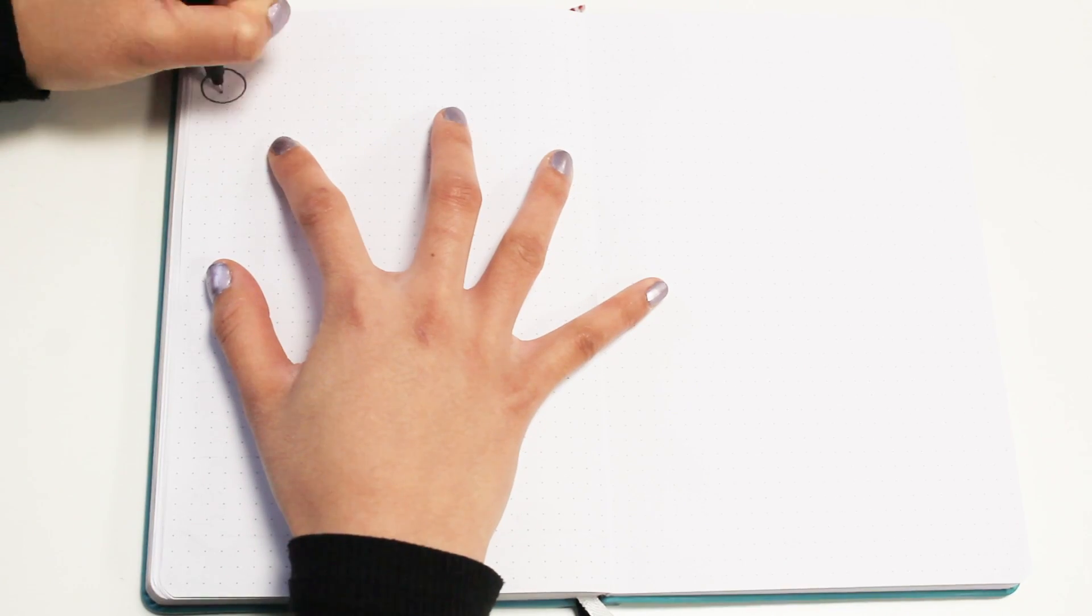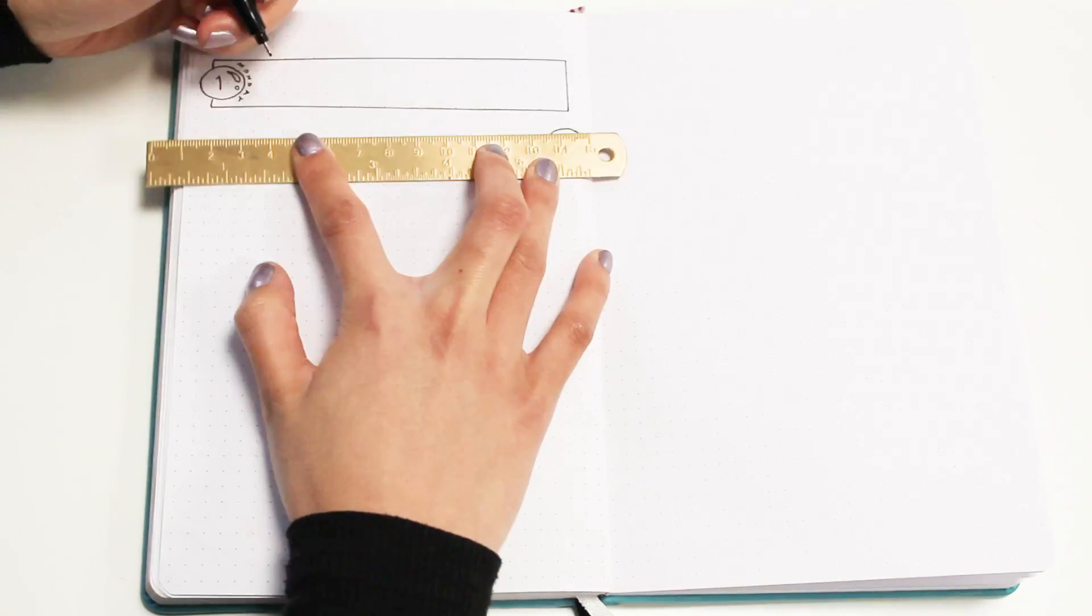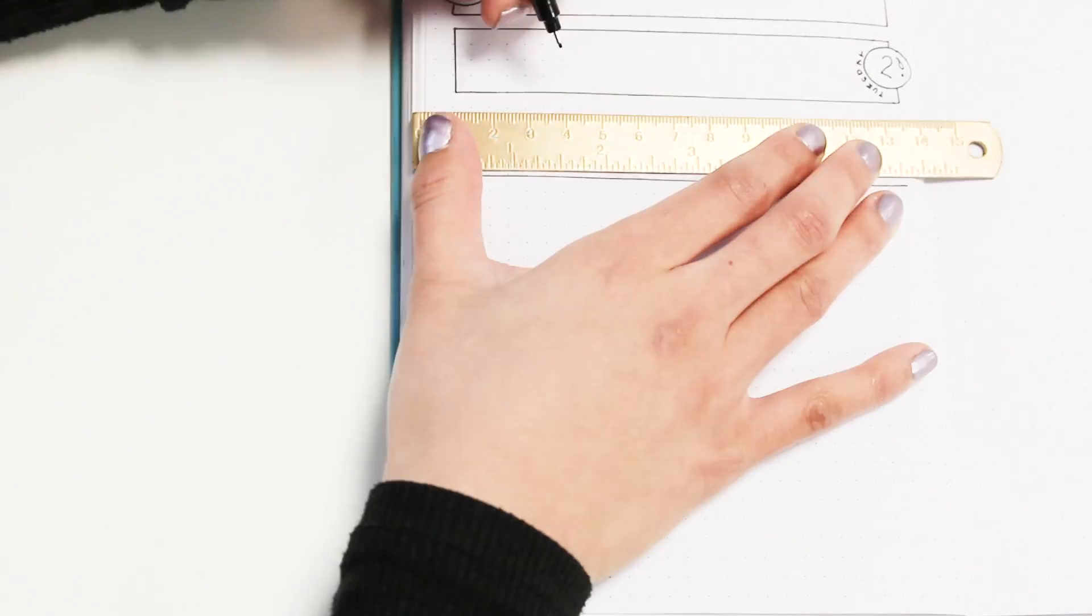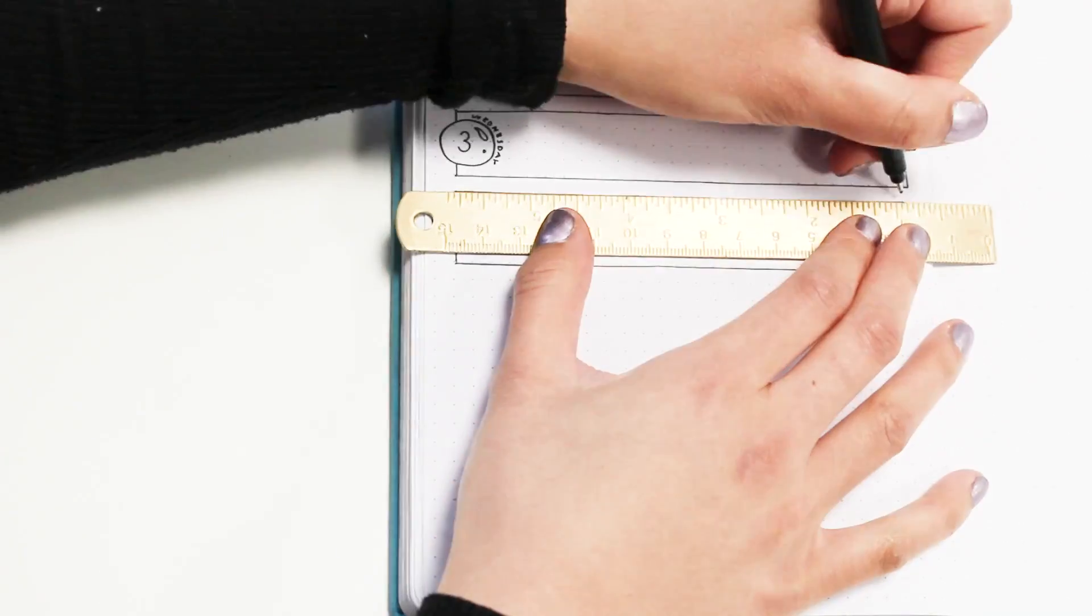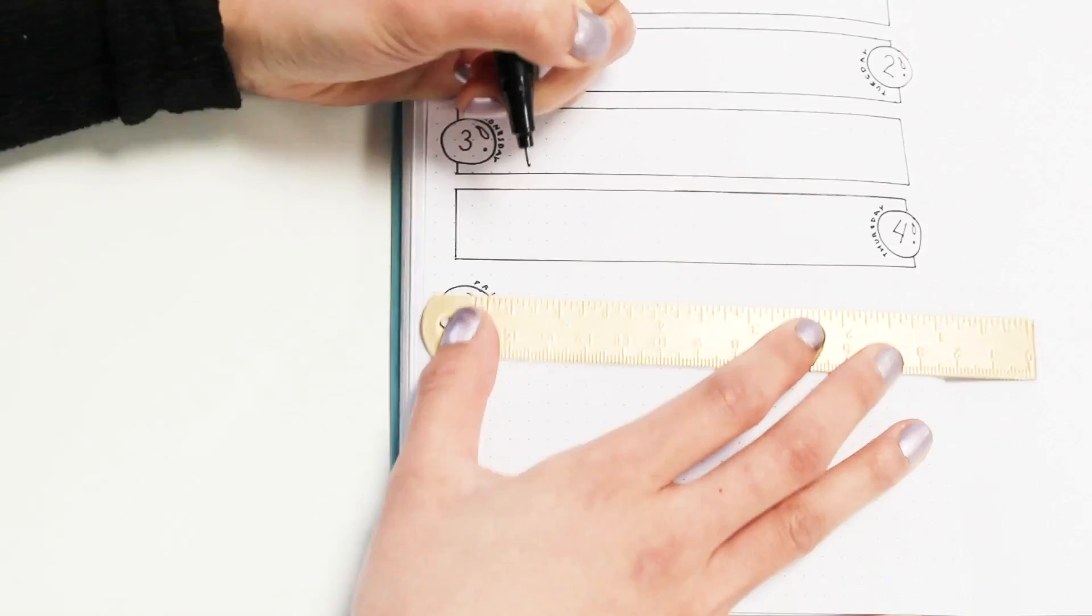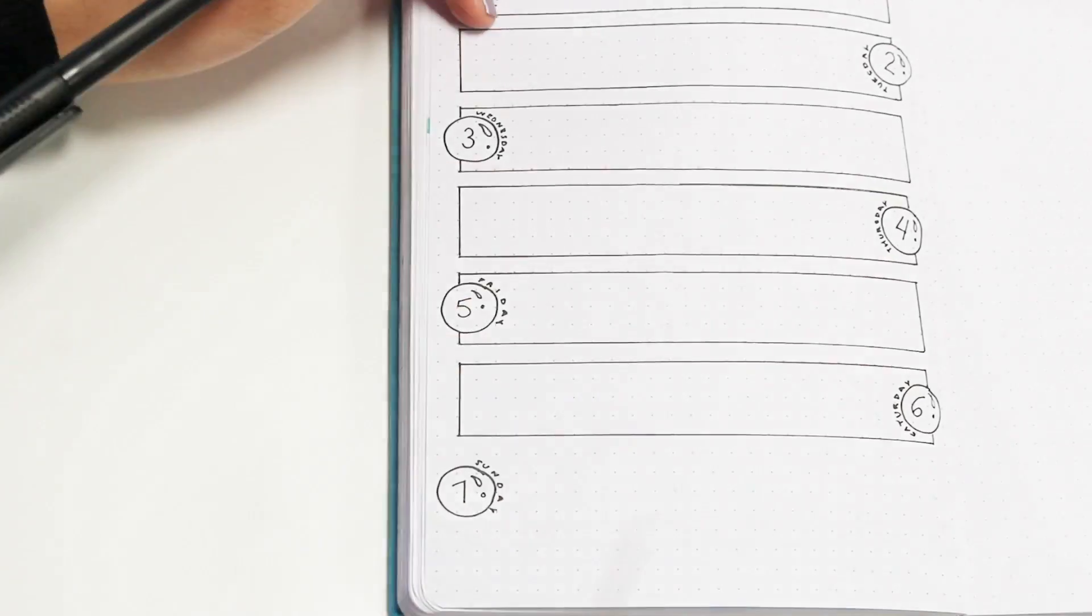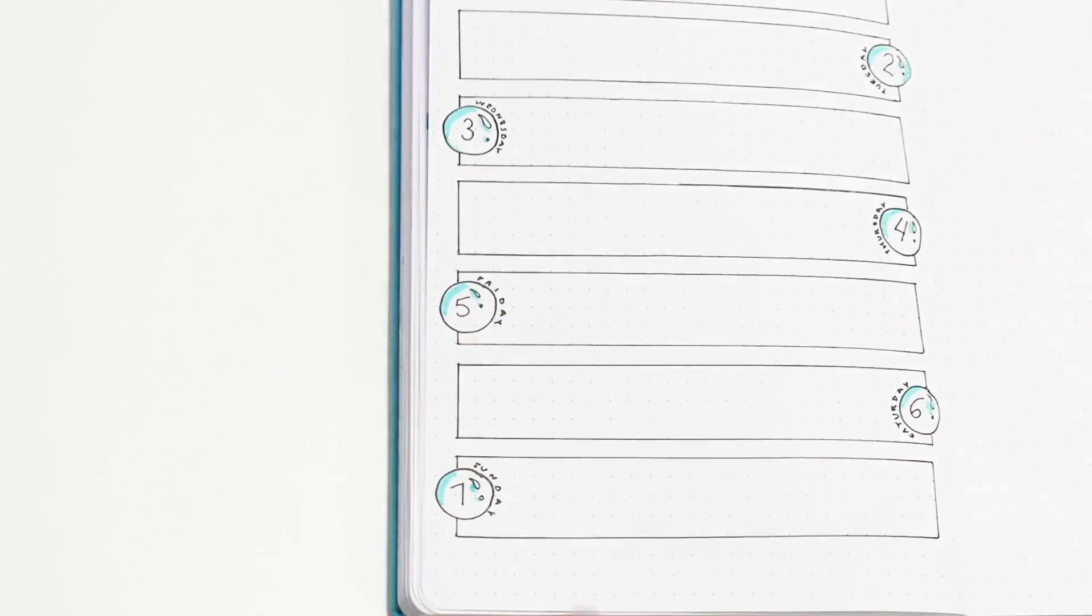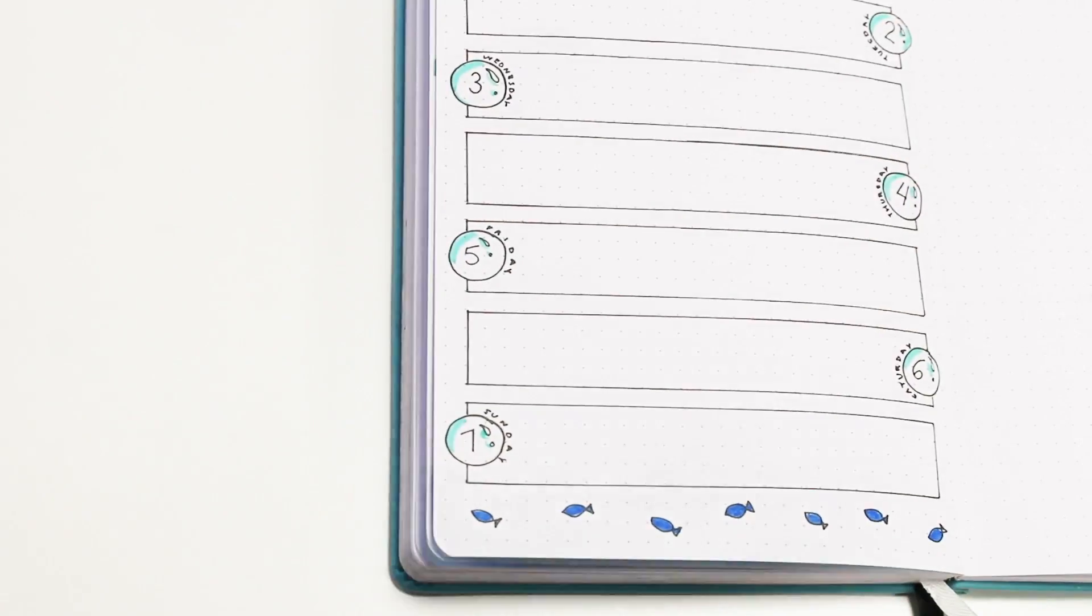Finally, I'm doing my weeklies. For my first week, I'm just doing a standard weekly with seven rectangles on a page, and I'm just writing the numbers in a bubble. Then I'm just decorating the little spaces at the top and bottom with some fish doodles.